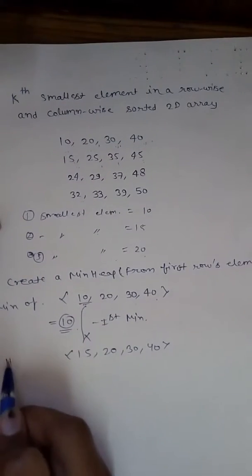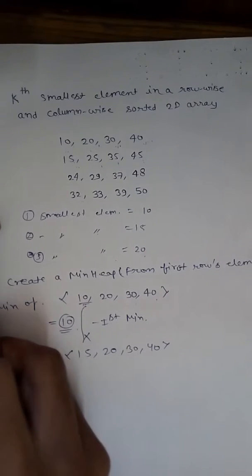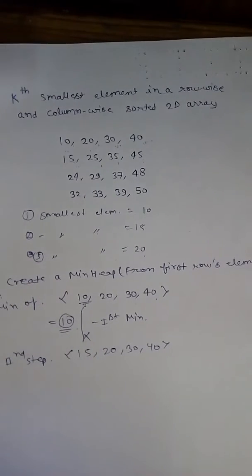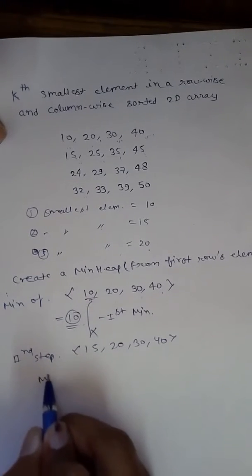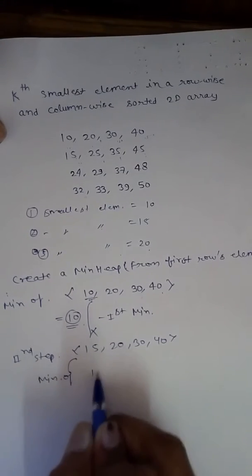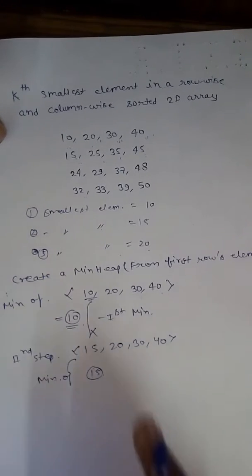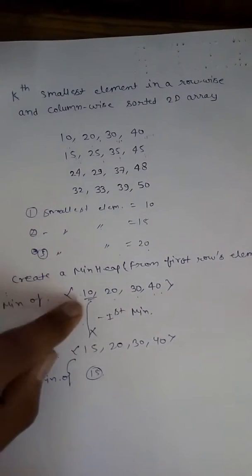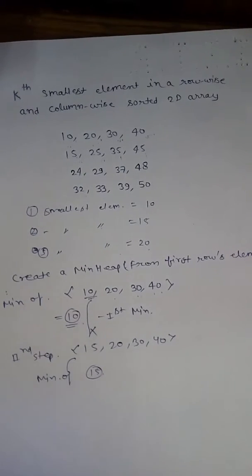After inserting 15, the heap now has 15 as the minimum in the first column. The minimum of all elements is 15, so 15 is our second minimum. This is our second minimum because we already have the minimums of the other three columns, and we now have the next minimum possible of the first column.